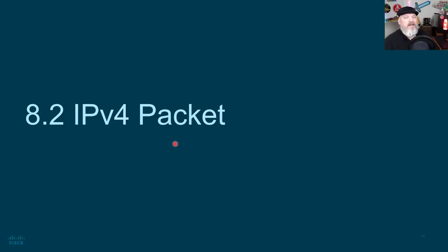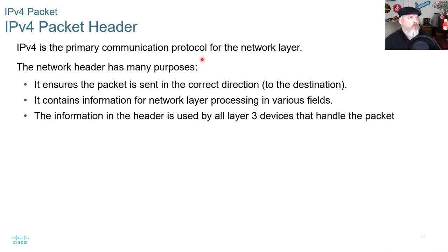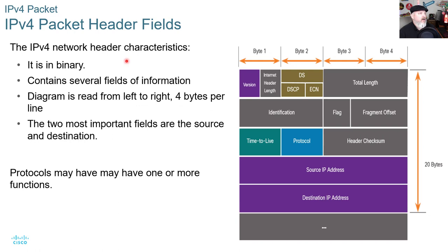V4 is the primary communication protocol for the network layer. The network header serves many purposes: it ensures the packet is sent in the correct direction to the destination, contains information for network layer processing in various fields, and that information is used by all Layer 3 devices that handle the packet. The V4 network header is in binary, contains several fields of information, and the diagram is read left to right, four bytes per line.